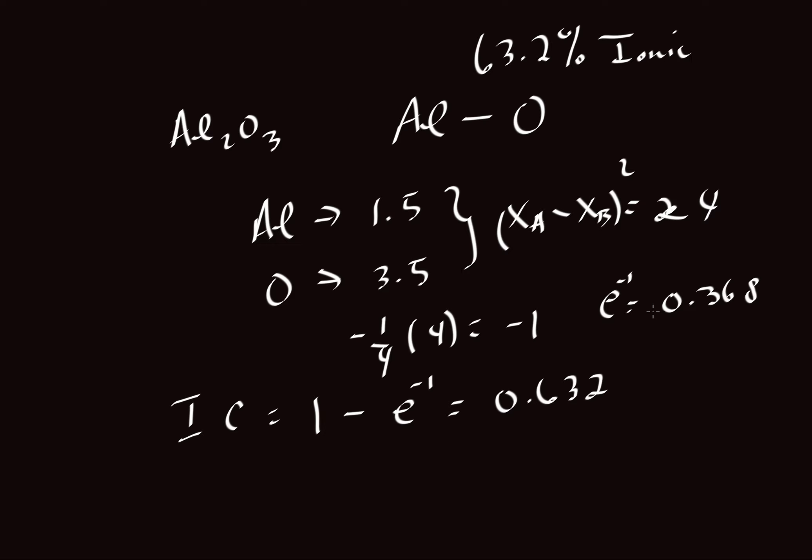So that means the aluminum and oxygen bond are 63.2 percent ionic. And the balance would be covalent. That balance would be this part here, the 0.368 or as a percent, 36.8 percent covalent.